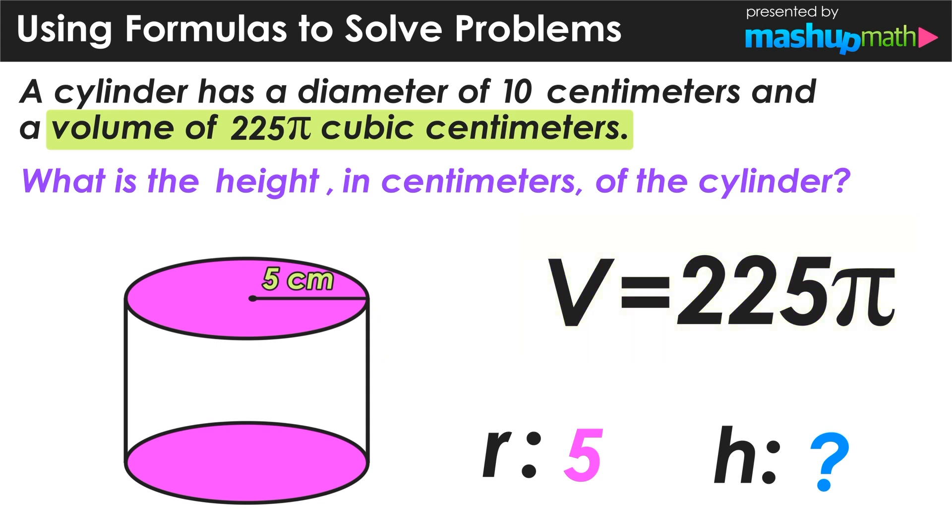And we know that the formula for the volume of a cylinder is equal to pi multiplied by the radius squared multiplied by the height. And since we were already given the volume of this cylinder, we know that this product will be equal to 225 pi. Now all that we have to do is use some algebra skills to find the value of h.